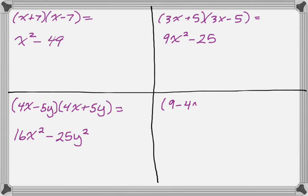And a final example. So 9 minus 4x, and 9 plus 4x. And so square the first to get 81, minus, square the last to get 16x squared.